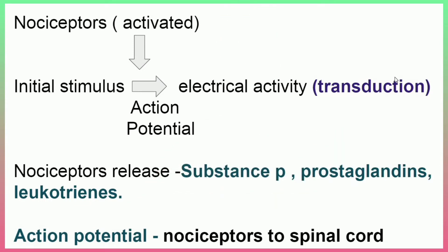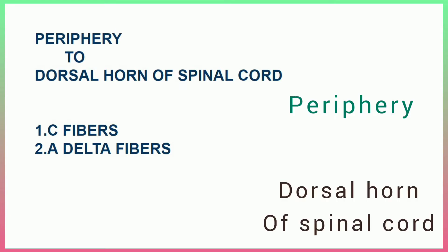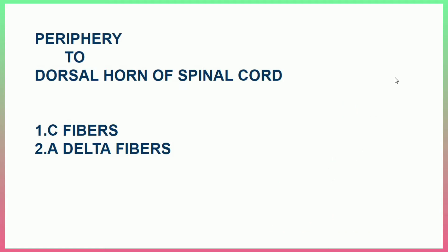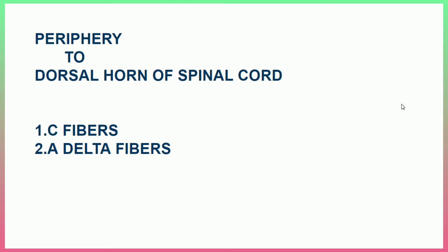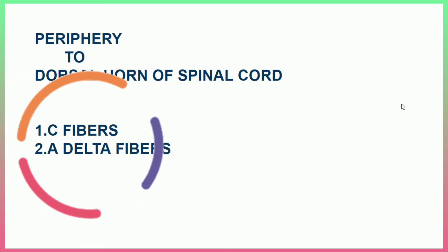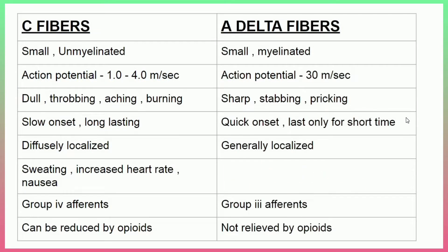So, given a stimulus, the nociceptor is activated and an action potential is generated. This is carried to the dorsal horn of the spinal cord — from the periphery to the dorsal horn — with the help of pain fibers, that is the nociceptor fibers. There are two fibers: C fibers and A-delta fibers. These two fibers carry the pain impulse from the periphery to the dorsal horn of the spinal cord.